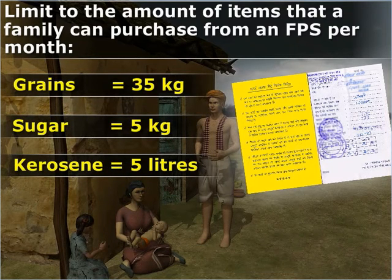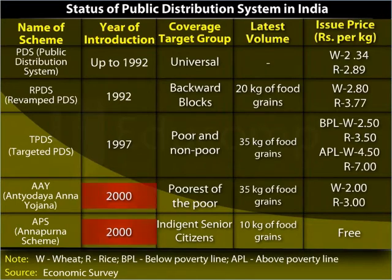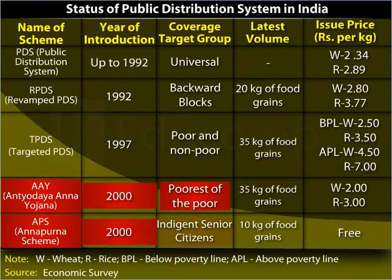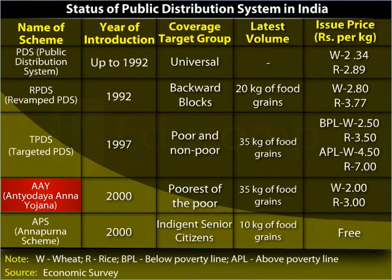In the year 2000, two special schemes — Antyodaya Anna Yojana, AAY, and Annapurna Scheme, APS — were released. In these schemes, the main target groups were the poorest of the poor and indigent senior citizens. Both AAY and APS were linked with the existing Targeted Public Distribution System, TPDS.